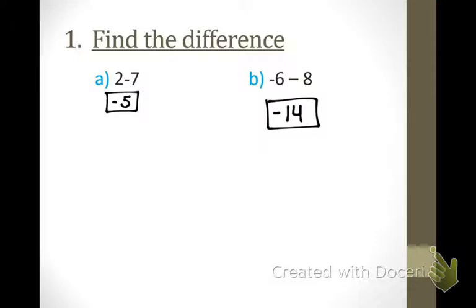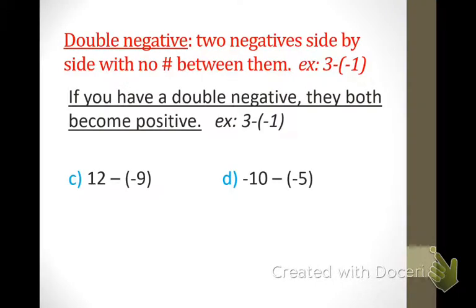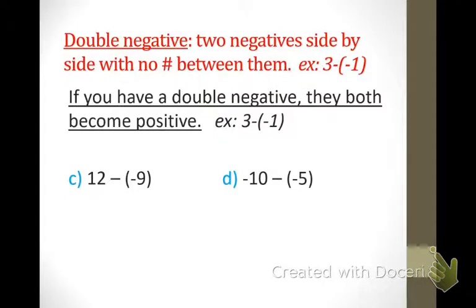Using those same rules we had with adding, we're also going to use them when we subtract. Here's another idea to write down: a double negative. The definition is two negatives that are side by side with no number between them — two negative signs. Is there a number in between those negative signs? No. Whenever there's two negatives side by side with nothing else between them, that's called a double negative. If you ever have a double negative, they both become a positive.